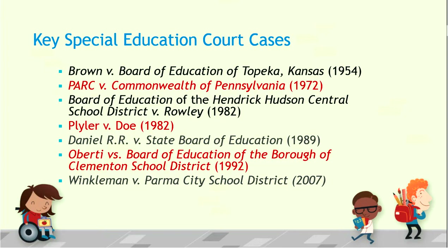In 1972, there was also a landmark case: the Pennsylvania Association for Retarded Children, or PARC, versus the Commonwealth of Pennsylvania. What came of this was that the state must guarantee free education to kids between the ages of 6 to 21, regardless of impairment. Up until that time, kids were not provided with the free appropriate public education that we've come to be familiar with. So PARC v. Commonwealth of Pennsylvania was indeed groundbreaking.